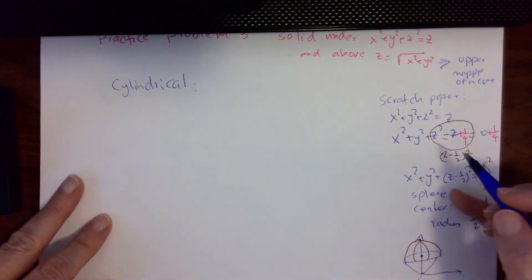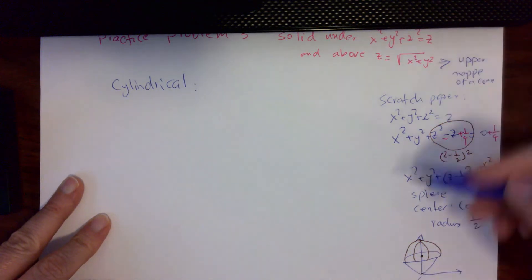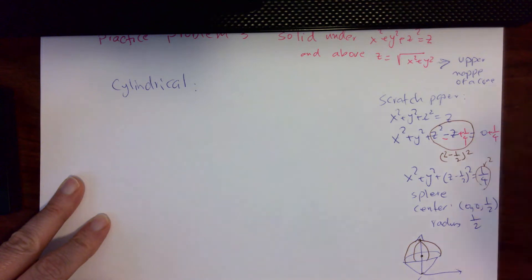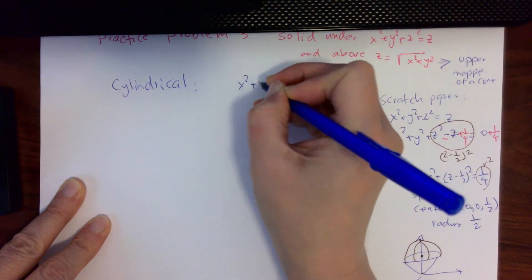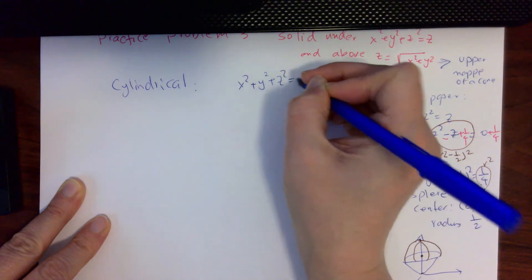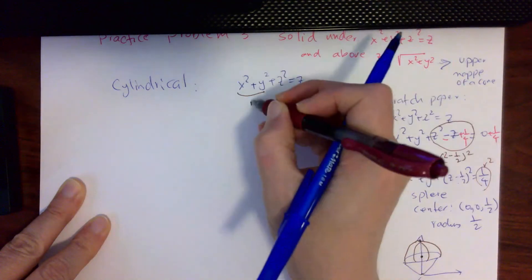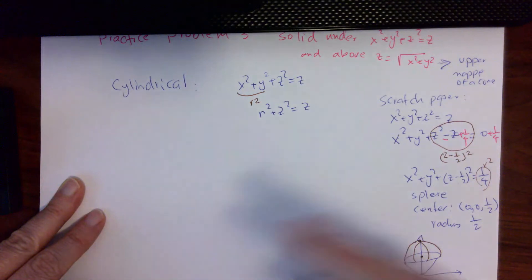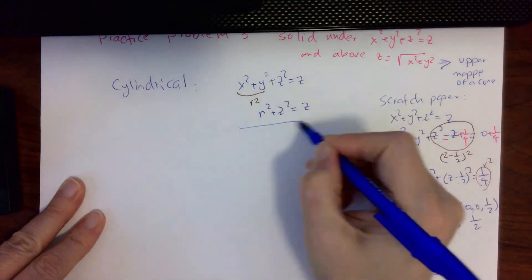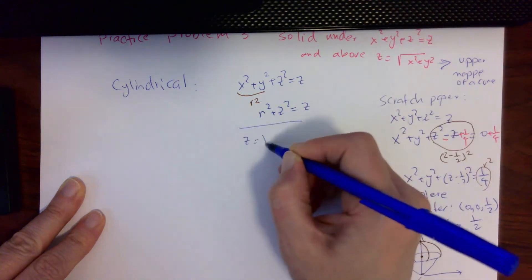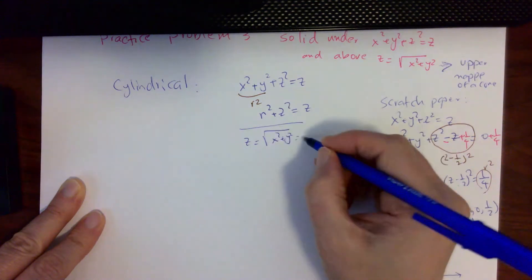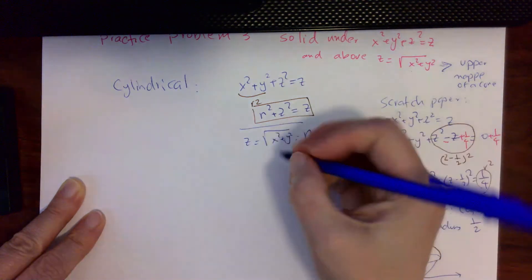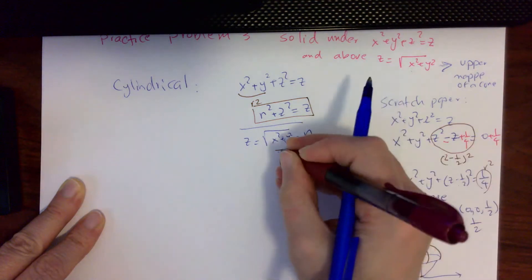Now let's set up the triple integral in cylindrical coordinates. I need to convert both bounds into cylindrical coordinates. Converting x² + y² + z² = z: the x² + y² becomes r², giving r² + z² = z. Converting z = √(x² + y²) gives z = r. So one bound is r² + z² = z and the other is z = r.